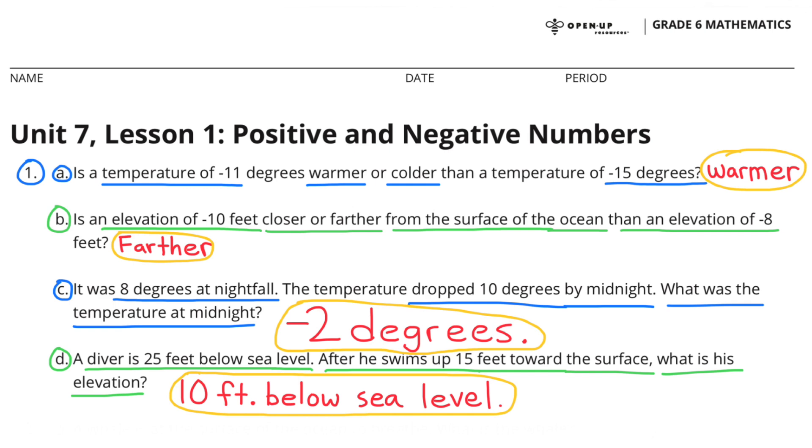C. It was 8 degrees at nightfall. The temperature dropped 10 degrees by midnight. What was the temperature at midnight? 8 minus 10 is negative 2. So it would be negative 2 degrees. Or we could look at it as 8 plus a negative 10 and that also would be negative 2. So the temperature at midnight would be negative 2 degrees.